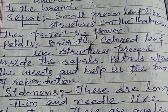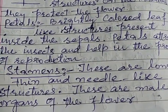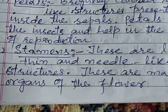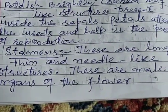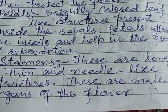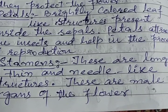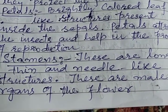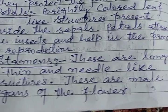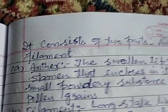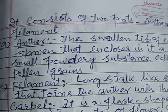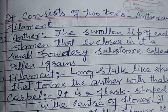Number four — stamens. These are long, thin, and needle-like structures. They are the male organs of the flower. Stamens consist of two parts.